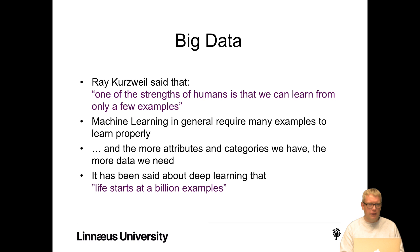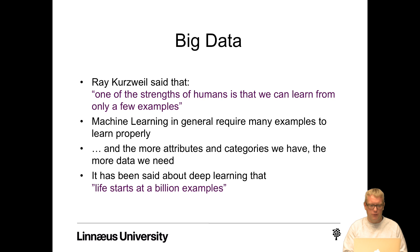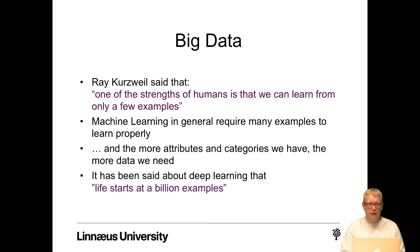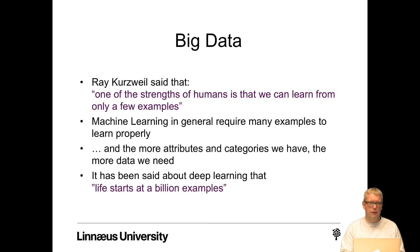Today we have access to lots of data and are in the big data revolution. Ray Kurzweil noted that one of the strengths of humans is that we can learn from only a few examples, but machine learning in general is the opposite — it requires many examples to learn properly. The more attributes and categories we have, the more data we need. It has been said about deep learning that 'life starts at a billion examples.' For deep learning to really work well, we need big data. For example, AlphaGo didn't have enough data from recorded human games and had to invent new data to learn from.